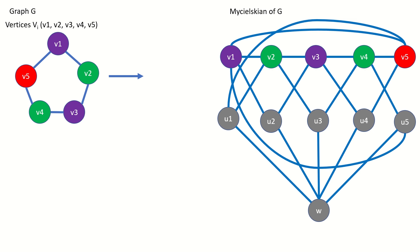Now for the second result: the Mycielsky graph of a graph G with chromatic number k has chromatic number k plus 1. Since there is a copy of the original graph in the Mycielsky graph, the chromatic number of the Mycielsky graph has to be at least k. In this example, we needed three colors to properly color the original graph, so we'll need three colors for the copy in the Mycielskian. Notice that vertex w is connected to all of the u vertices, so if the u vertices can be properly colored with k colors, vertex w must be colored with a completely different color — meaning the entire Mycielsky graph can be properly colored with k plus 1 colors.